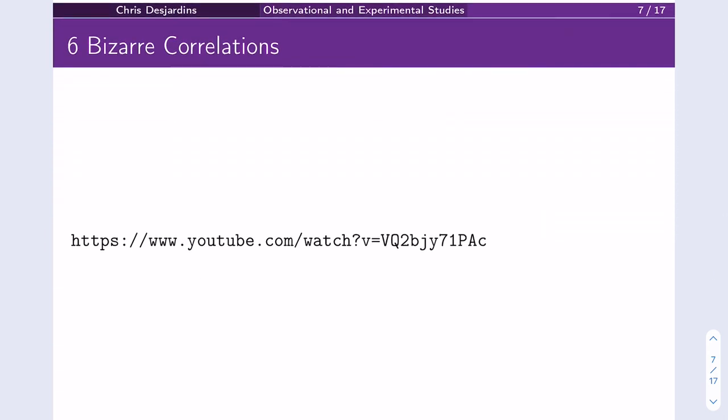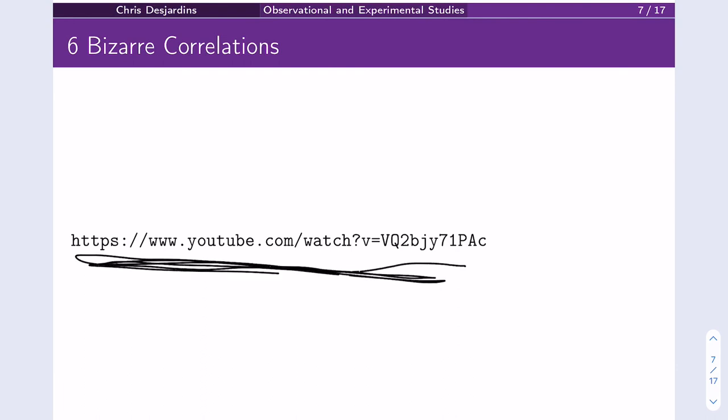I'd encourage you to watch the six bizarre correlations video linked here, because it's fascinating how you can end up with what I'd call statistical artifacts — things that just should not be related to one another but appear to be. These are associations, not causations, and the YouTube video has six really strange examples.